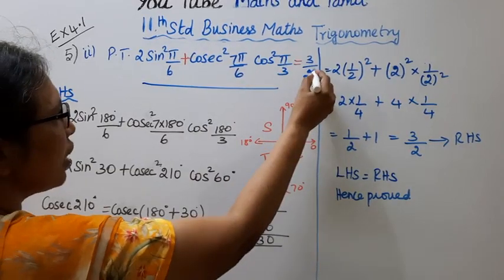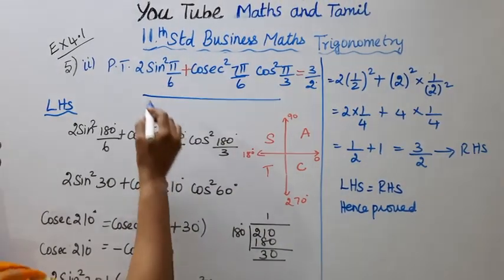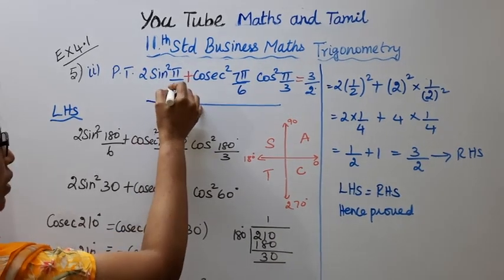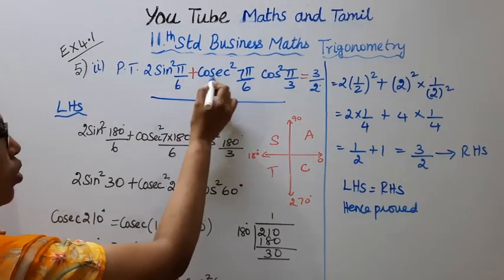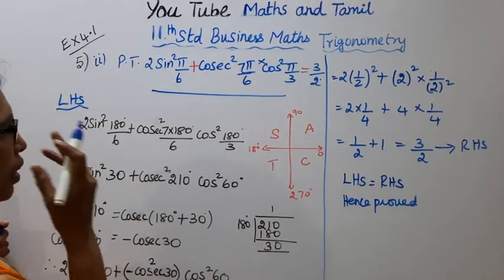This is left hand side, this is right hand side. Prove that 2 sin squared pi by 6 plus cosecant squared 7 pi by 6 into cos squared pi by 3.